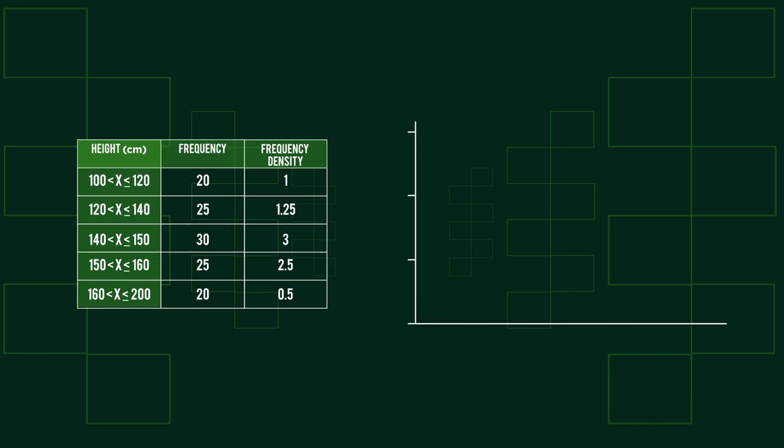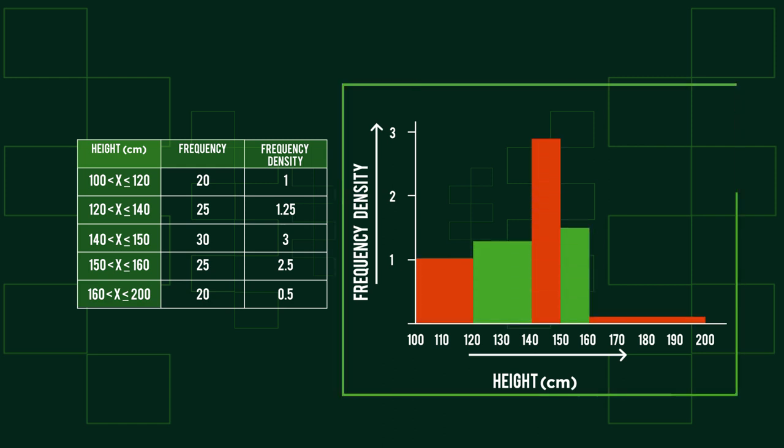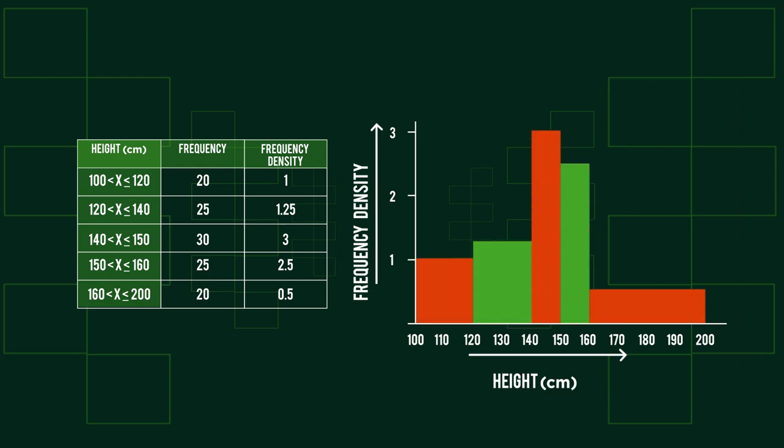We can take these values and plot them against frequency density, not frequency. If you want to try this yourself, pause now. The completed histogram should look like this. The bars touch on a histogram, which works with our continuous data, and we can draw clear conclusions about what the data shows now.